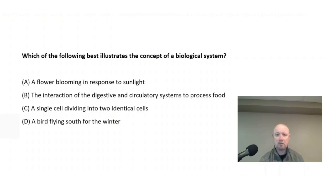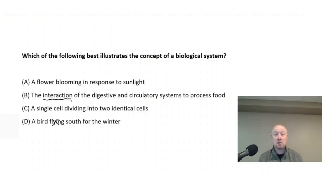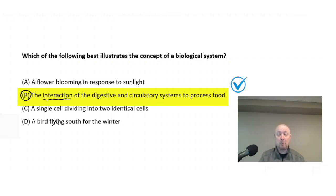When we think about a biological system, we want to think of a collection of different things working together to perform one function. I'm going to eliminate the bird flying south for the winter. Although A and C describe biological processes, the key point is the interaction in choice B — the interaction of the digestive and circulatory systems to process food. That represents a collection of different processes working together. The correct answer is B.